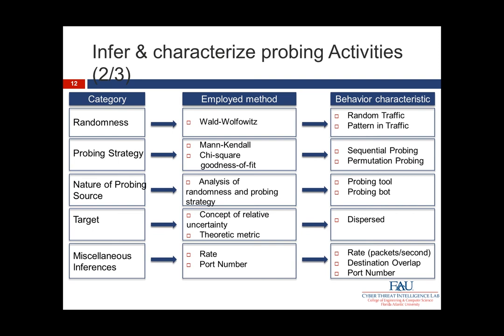We then look at the nature of the probing source by analysing the randomness and probing strategy together, inferring whether it is likely to be a probing tool or a probing bot. We look at the target being analysed using the concept of relative uncertainty and a theoretic metric to determine whether the target is dispersed or not. We also look at some miscellaneous inferences: the rate — how many packets per second the attack is occurring — and the port numbers being scanned, from which we can infer what type of vulnerability is being probed.